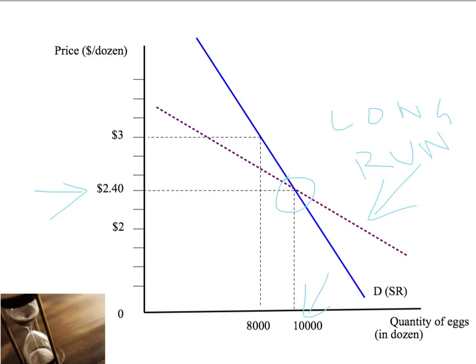However, notice that this new demand curve — this long-run demand curve — is more elastic or flatter than our short-run demand curve. In other words, it tells us that as the price goes up to $3, consumers are going to tend to want to buy fewer eggs in the long run than in the short run. Similarly, if we'd had a price fall, our long-run demand curve would tell us that people want to buy more eggs in the long run than in the short run. So this dotted line represents people's choice after they adjust to the change in the price of eggs — if the price goes up, they look for substitutes and tend to buy fewer eggs; if the price had gone down, people would have substituted to eggs and bought less of something else.